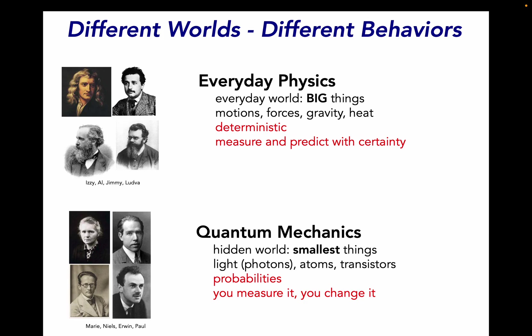So there are different worlds. In the everyday world we live in, we're used to big things and forces and motions like gravity and heat. These forces and motions are deterministic and we can measure and predict them with certainty. But at the very smallest sizes of things, where quantum mechanics lives, in light, photons, atoms, and even transistors in your laptop, it doesn't work like that. All we get are probabilities. We can determine those probabilities with great accuracy, but it's just probabilities. And when you measure something, you also change it forever.